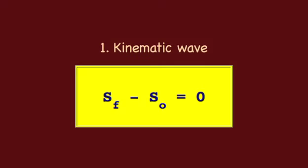A kinematic wave is represented by the balance of friction and gravitational forces only; all other slopes are neglected. A diffusion wave is represented by the balance of pressure gradient, friction, and gravitational slopes; all other slopes are neglected.